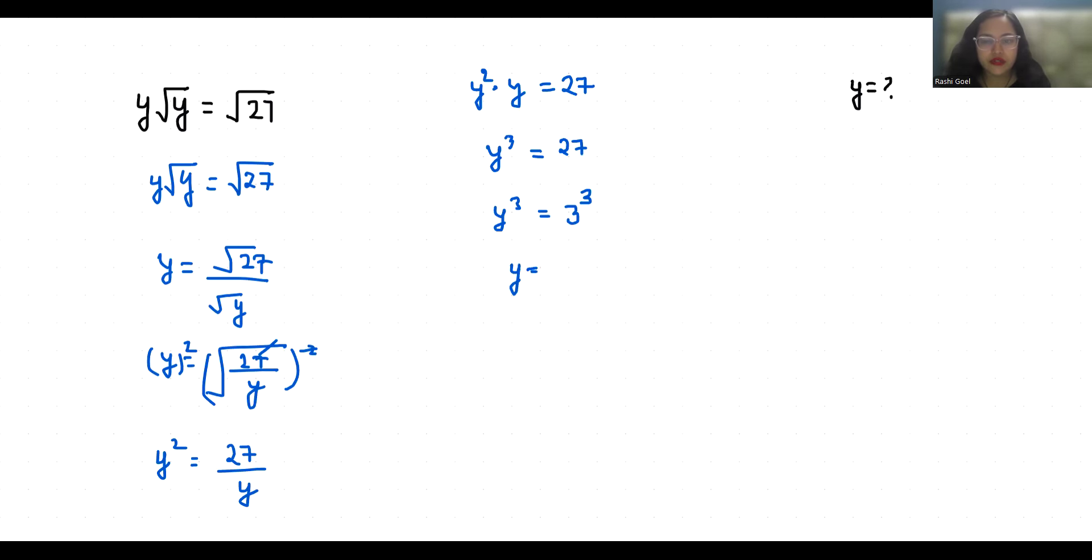Now let's verify. 3 root 3 equals 27. 3 root 3, I'll do squaring both sides so 9 and root 3 squared is 3.